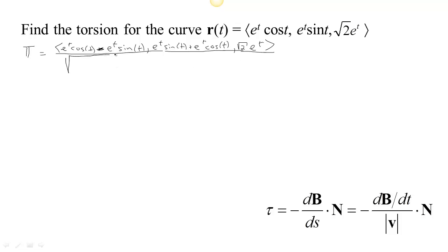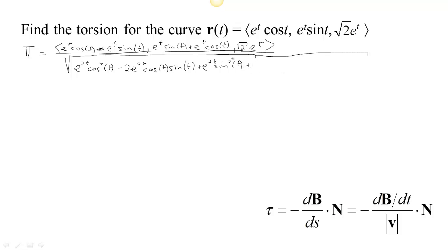That's the velocity, so we need to divide by the speed. If we square the components, we get e^(2t) cos²t, then minus 2e^(2t) cos t sin t, then plus e^(2t) sin²t. There's going to be a lot of simplification. When we multiply out the next component, we get another e^(2t) sin²t — so there'll be two of those — plus 2e^(2t) sin t cos t that will cancel the cross term, and another e^(2t) cos²t. If we square the last component, we get 2e^(2t).